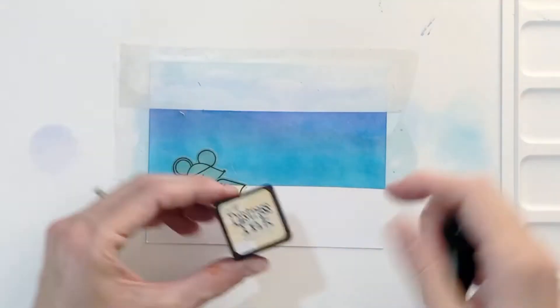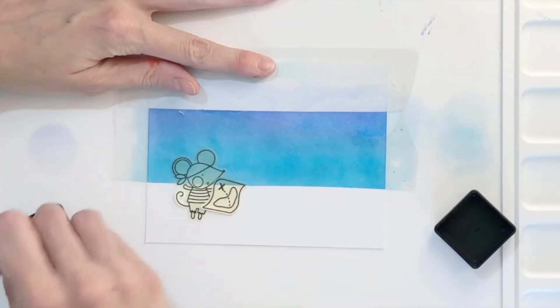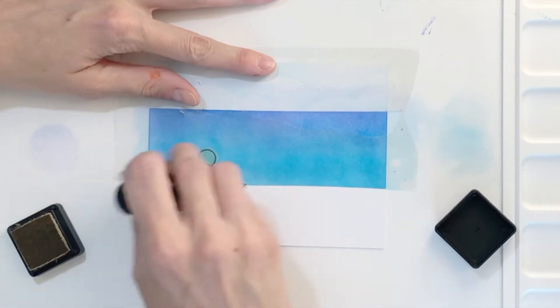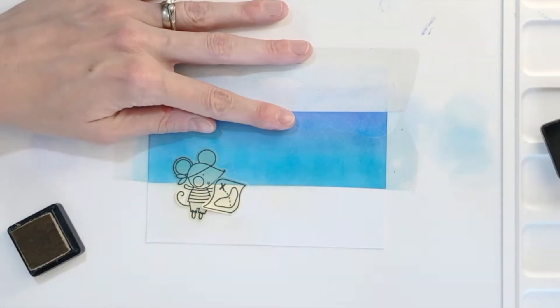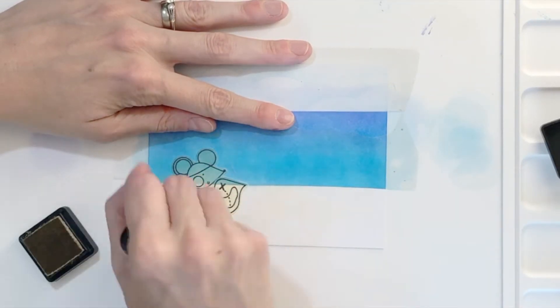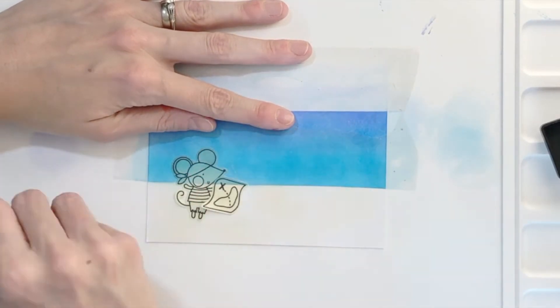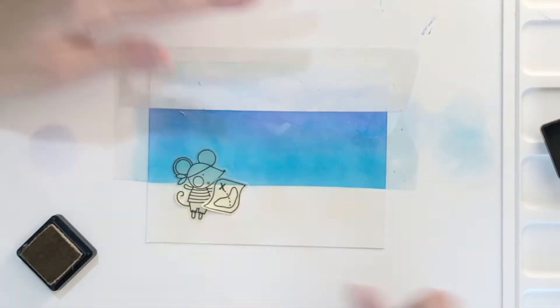Once I finish the ocean I then reposition my bottom piece of contact paper to protect my ocean, and now I'm going to start to ink blend my sand. I'm starting with Antique Linen distress ink and I'm just going to ink blend that whole stretch of sand here with this color just to kind of make it a little bit more of that tan and sandy beach color.